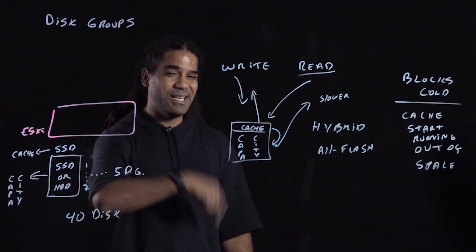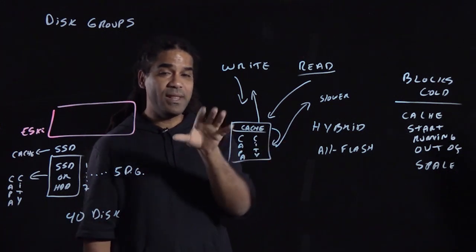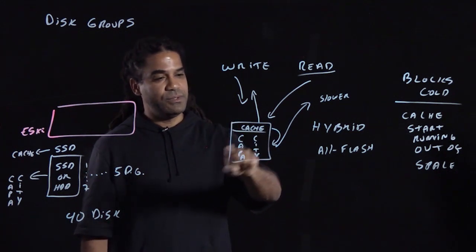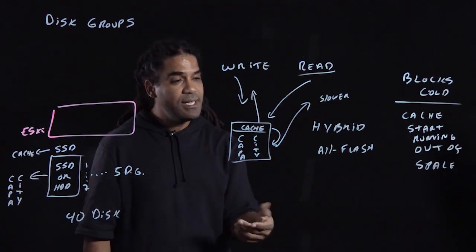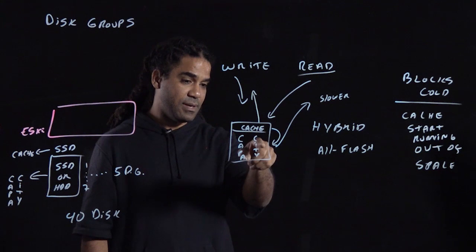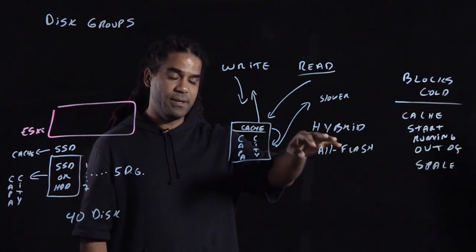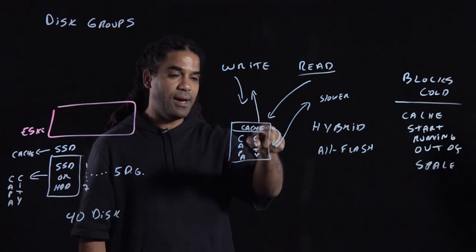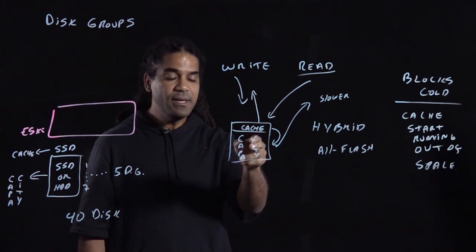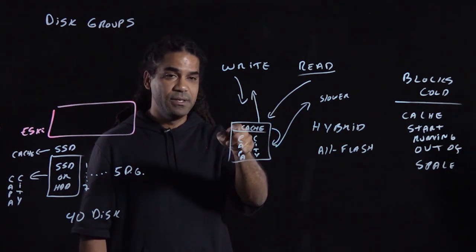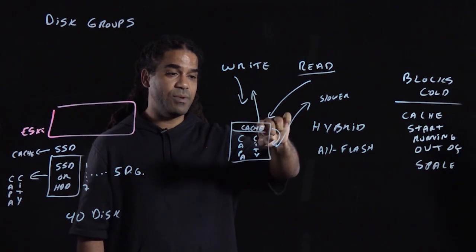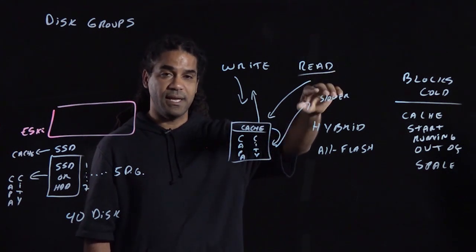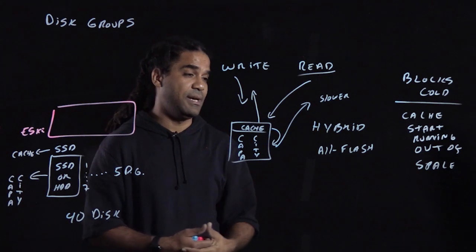One more thing I didn't mention is that one thing that vSAN does, so that the reads can at least be as fast as they can, is that any time a read comes from the capacity tier for the hybrid, the cache will copy those blocks and keep them in cache. So that the next time the read comes in for that block, it will be in cache, and the read will be responded directly from the cache. So you get better performance that way.